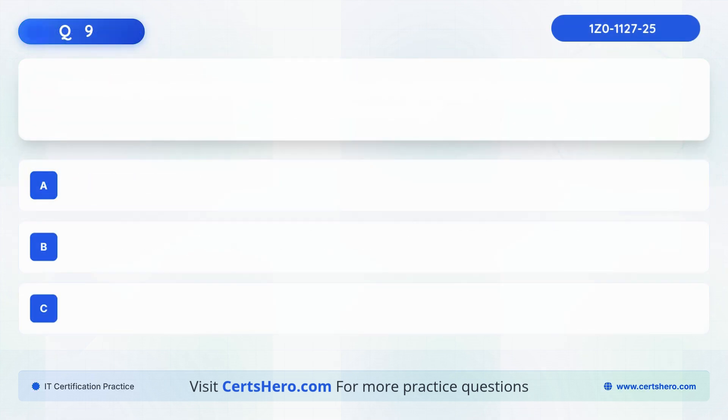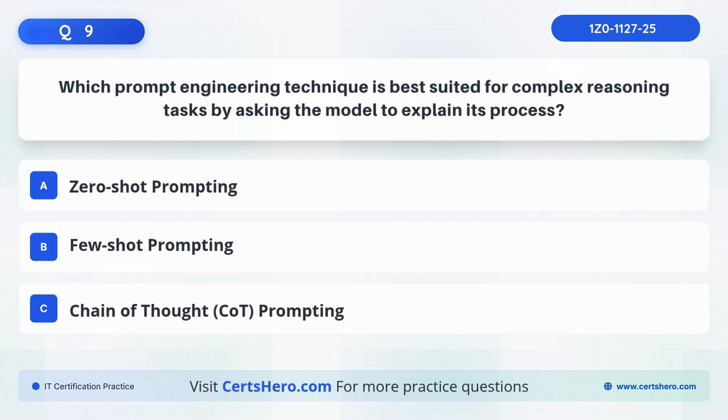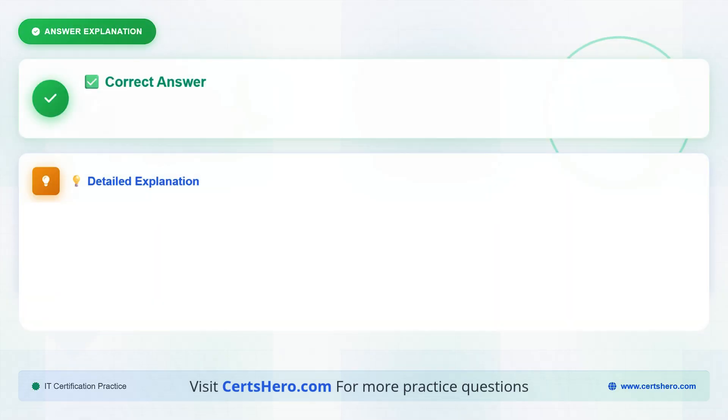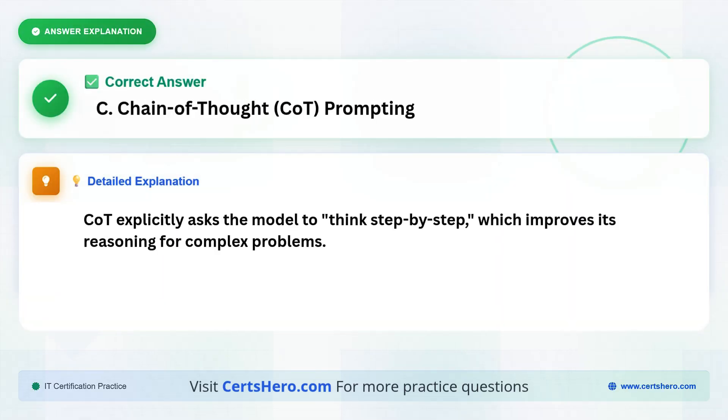Question 9. Which prompt engineering technique is best suited for complex reasoning tasks, by asking the model to explain its process? Is it, Zero Shot Prompting, Few Shot Prompting, or Chain of Thought Prompting? The correct answer is C, Chain of Thought Prompting. CoOT explicitly asked the model to think step-by-step, which improves its reasoning for complex problems.